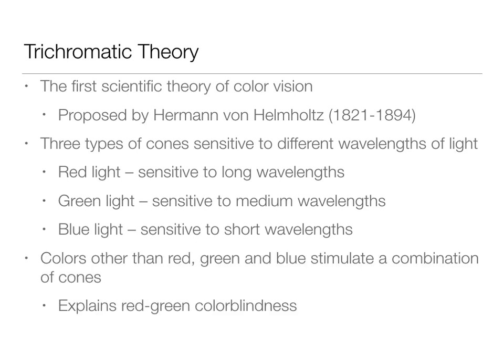Colors other than red, green, and blue stimulate a combination of cones. It's not that a short-wavelength cone can only detect short-wavelength light — it's just best at it. So color combinations activate multiple cones. This theory has good evidence in red-green color blindness. While there are newer theories, the trichromatic theory is a really good foundation on which those were built.